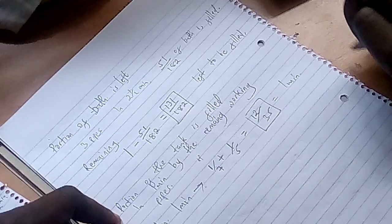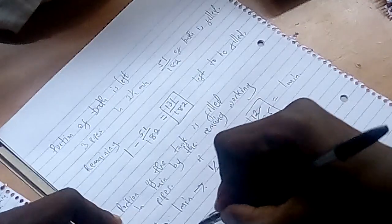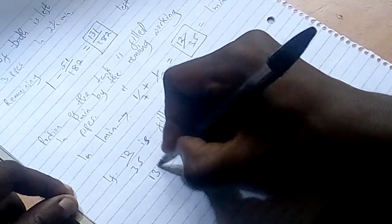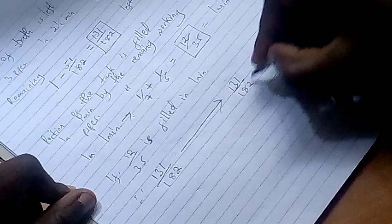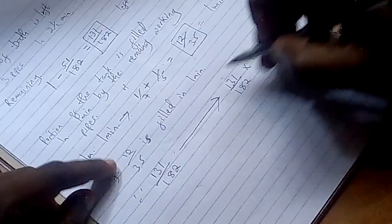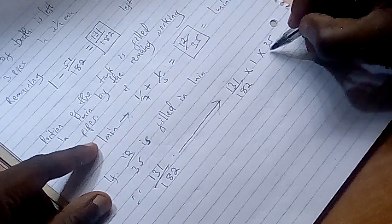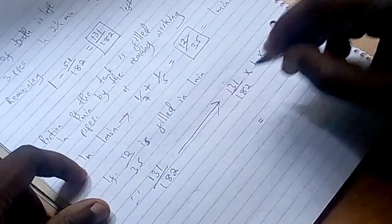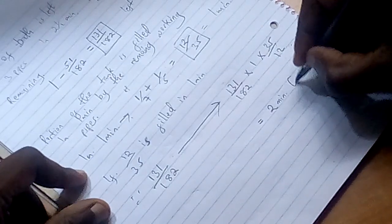Now we calculate how long it will take to fill the remaining 131 over 182 of the bath at a rate of 12 over 35 per minute. That will be 131 over 182 multiplied by the reciprocal, which is 35 over 12. When you punch these figures into the calculator, you will finally get the answer to be 2 minutes and 6 seconds.